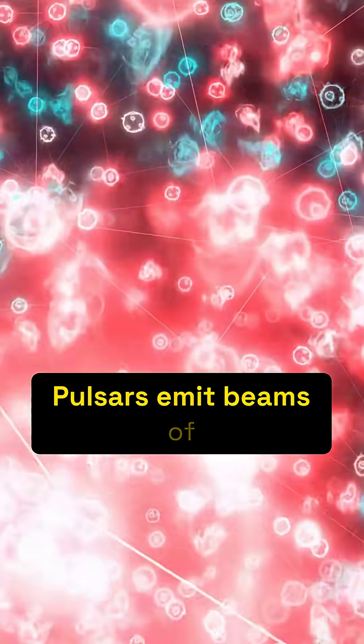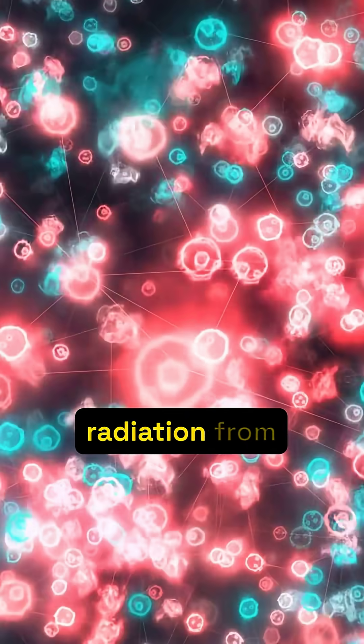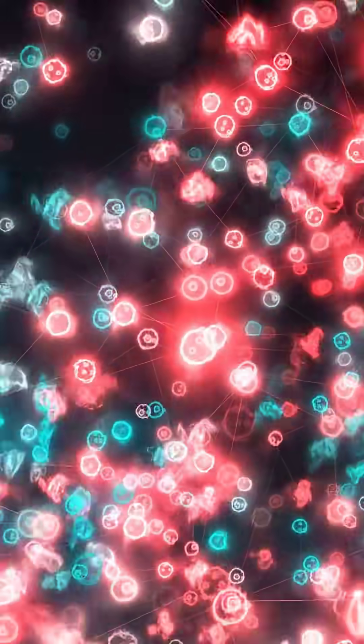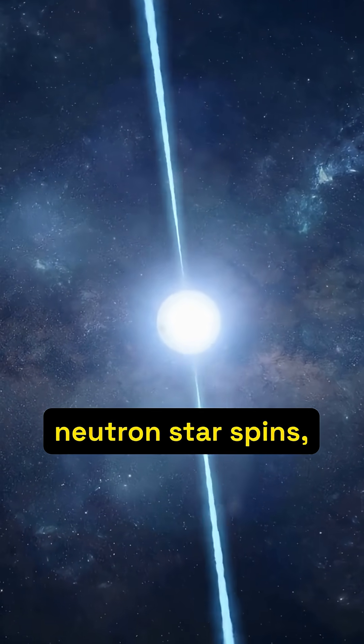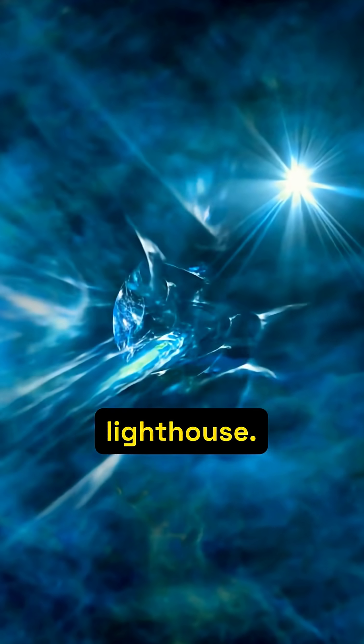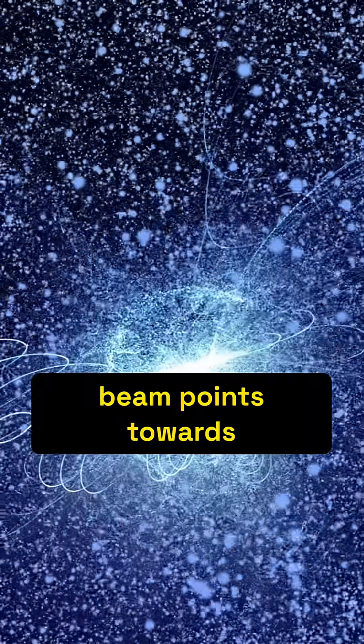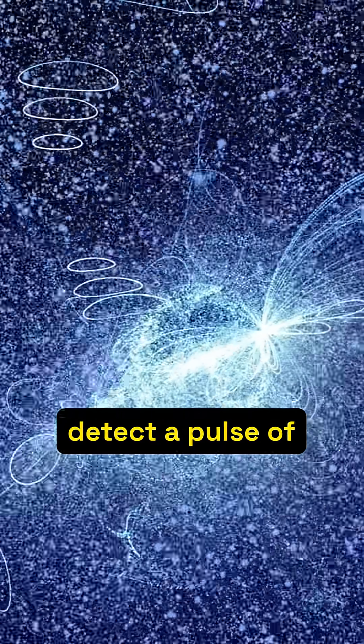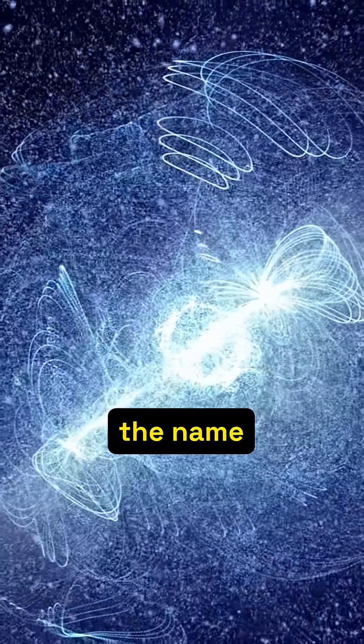Pulsars emit beams of electromagnetic radiation from their magnetic poles. As the neutron star spins, these beams sweep across space, much like a lighthouse. When a beam points towards Earth, we detect a pulse of radiation, hence the name Pulsar.